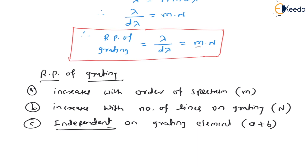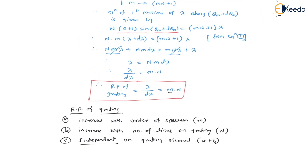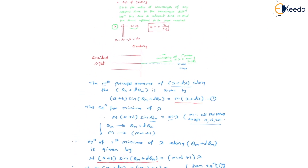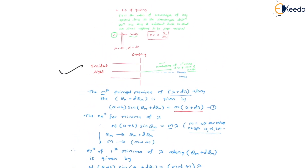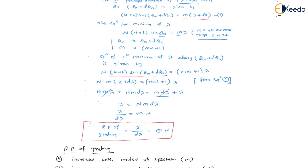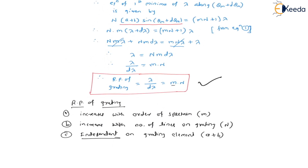This is all about the resolving power of grating. In your examination, questions may ask what is meant by resolving power of grating or how to increase it, worth two or three marks. Simply write the definition, draw the small diagram, and show the derivation to arrive at resolving power = m × N, in terms of order of spectrum and number of lines on the grating. Thank you so much.